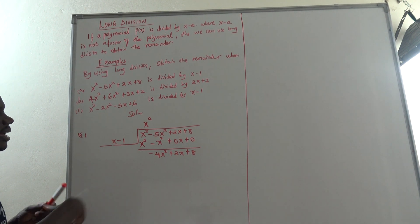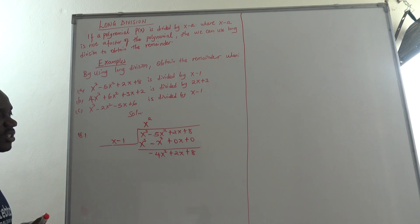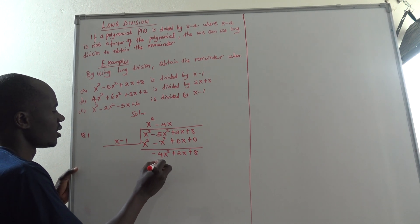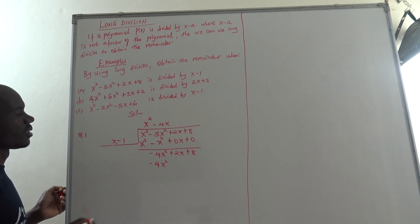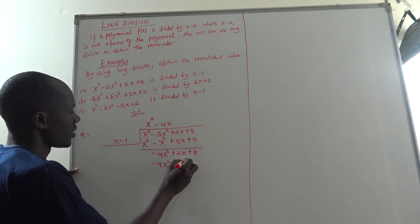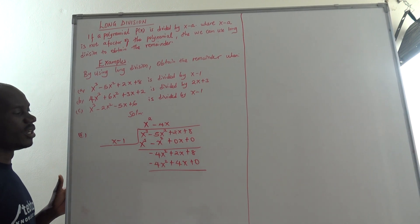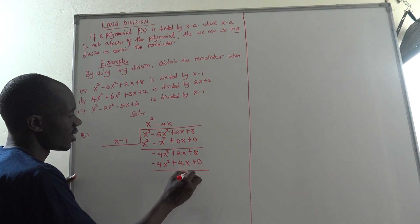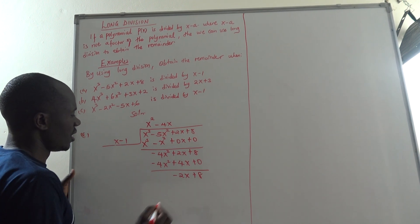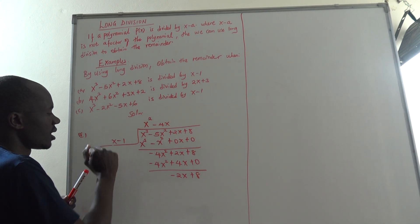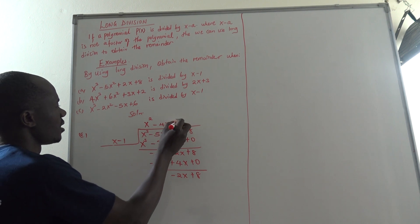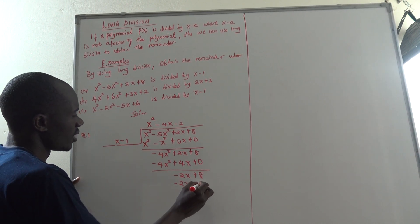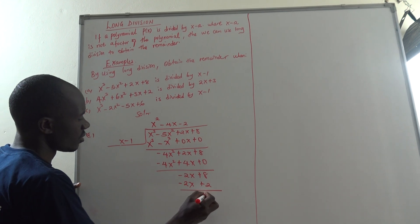Which number can I put here? When I multiply with x, I get negative 4x squared, so it is automatically negative 4x. Negative 4x times x gives negative 4x squared. Negative 4x times negative 1 gives plus 4x. Then, if we don't have a constant, we can say plus 0. We deduct. This minus minus gives 0. 2x minus 4x gives negative 2x. Then plus 8 minus 0, we are getting 8.